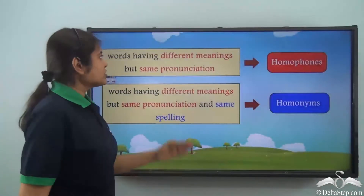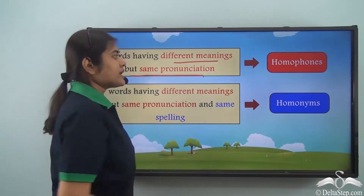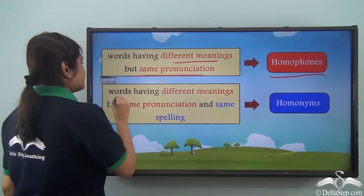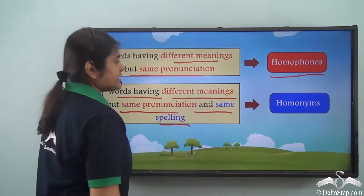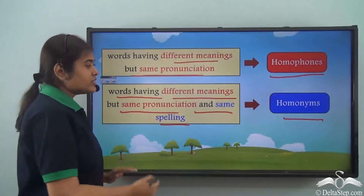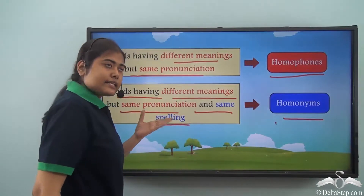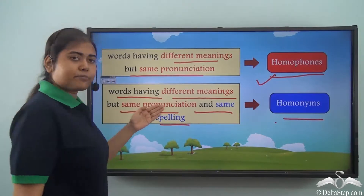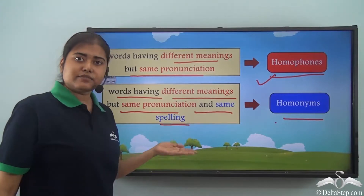So what do we note? Words having different meanings but same pronunciation are called homophones. Whereas words having different meanings but same pronunciation and same spelling are called homonyms. We see that some of the characteristics of homonyms are the same as that of the homophones — that is different meanings and same pronunciation. The only difference is homonyms have the same spelling as well.